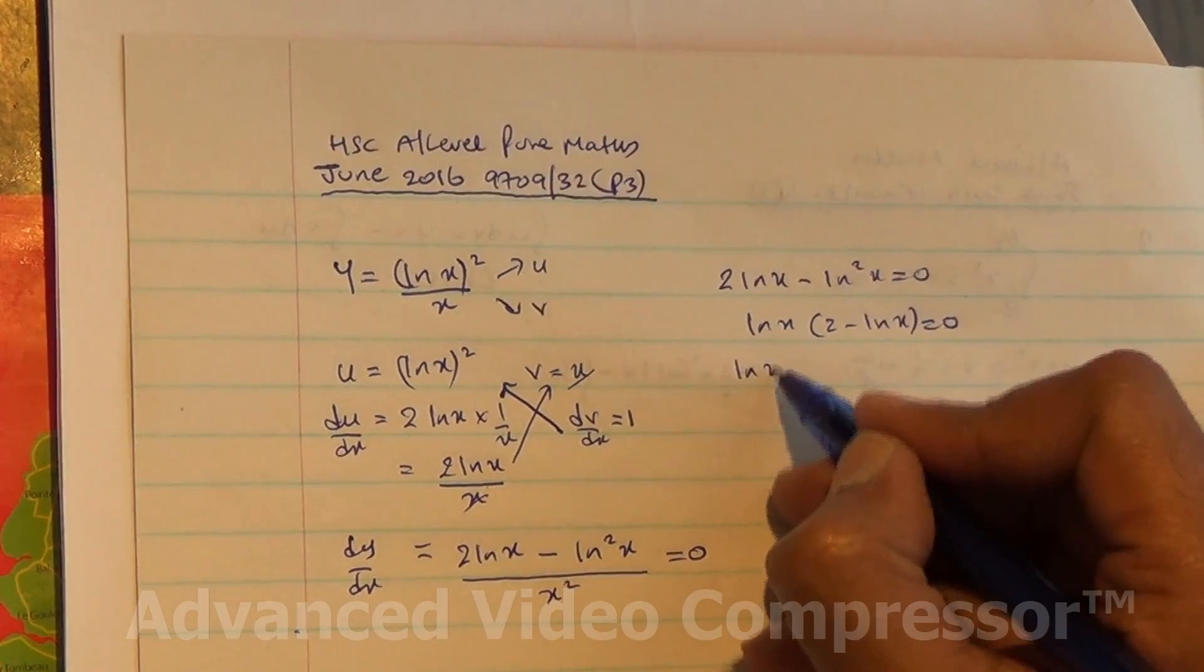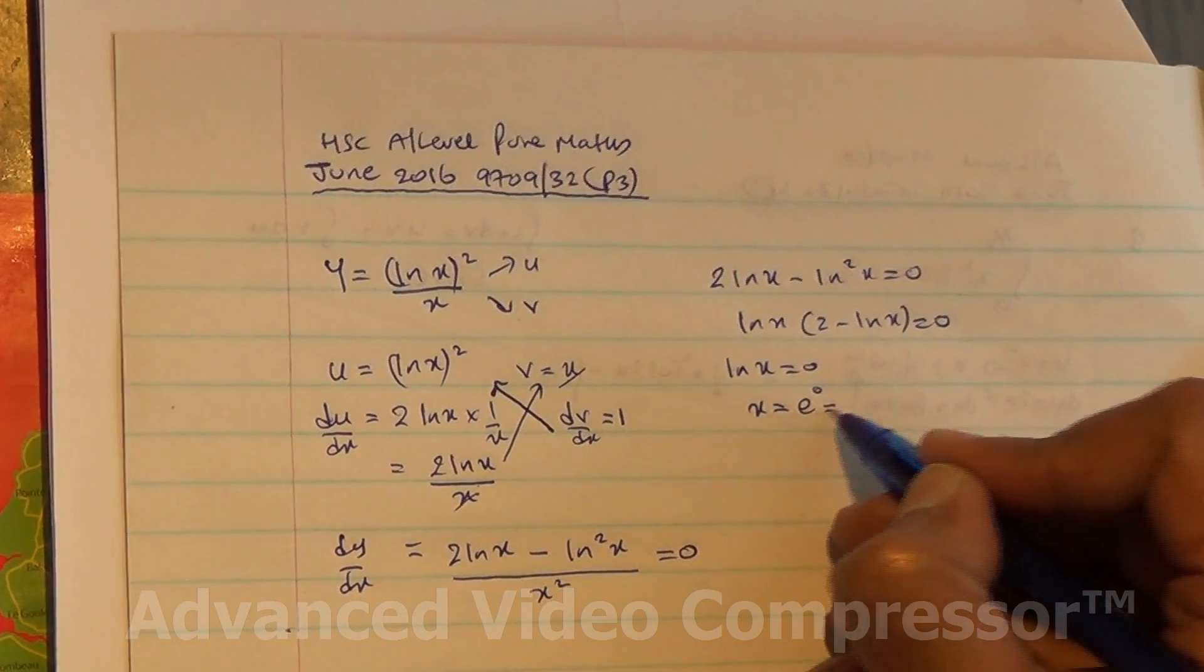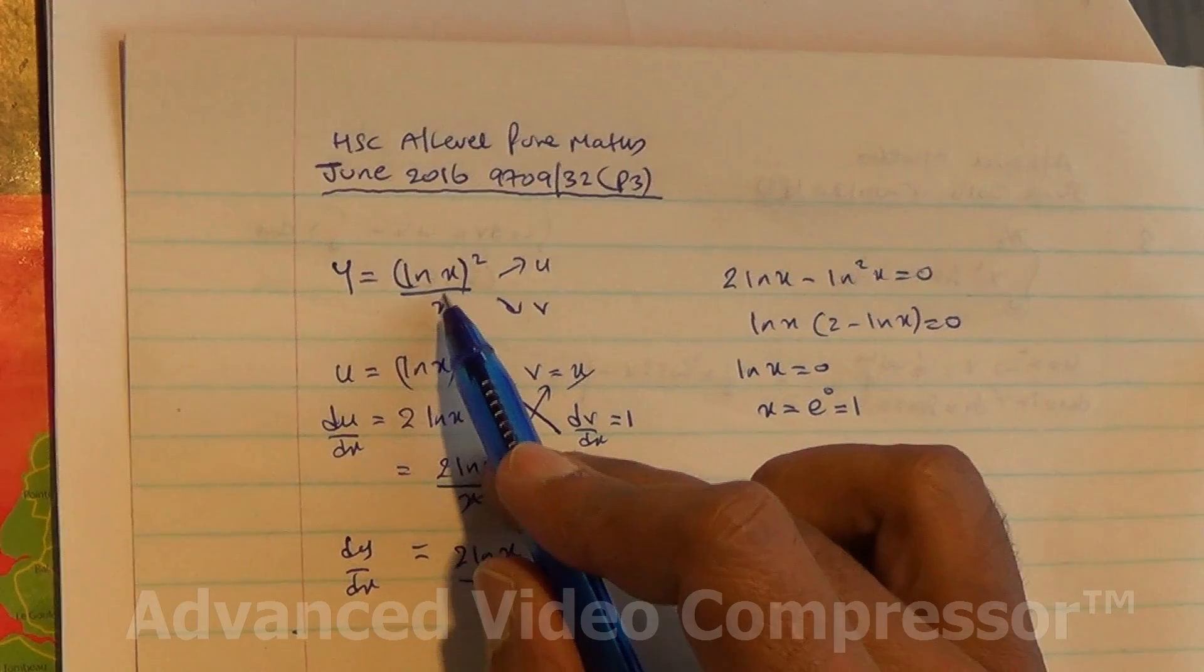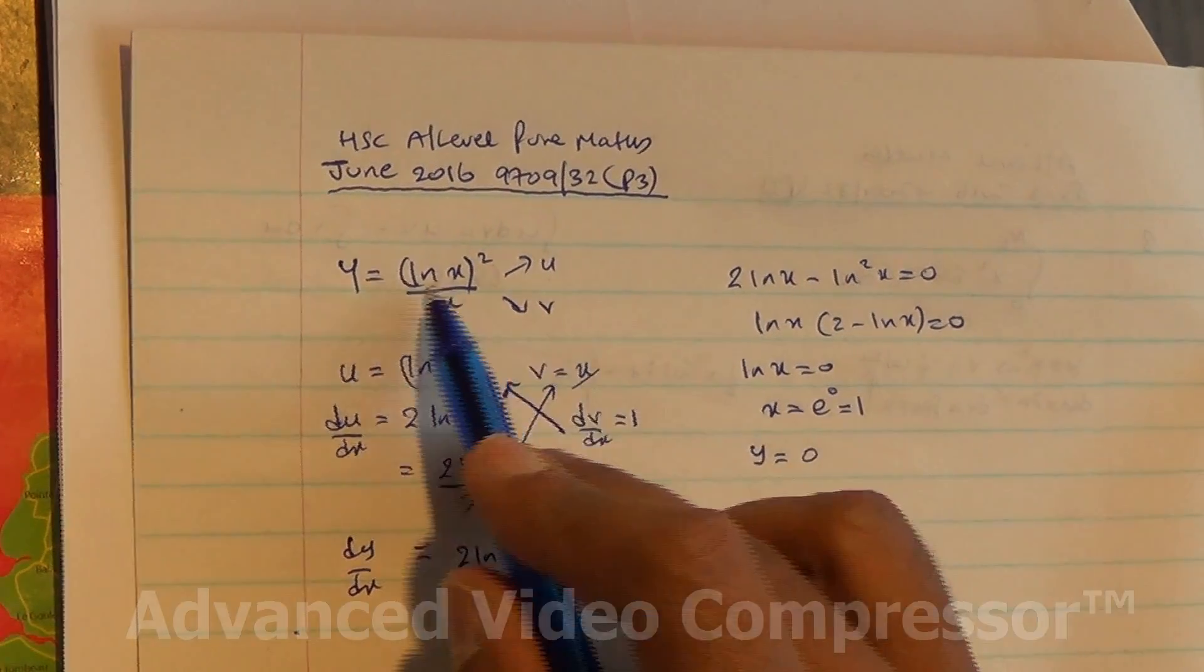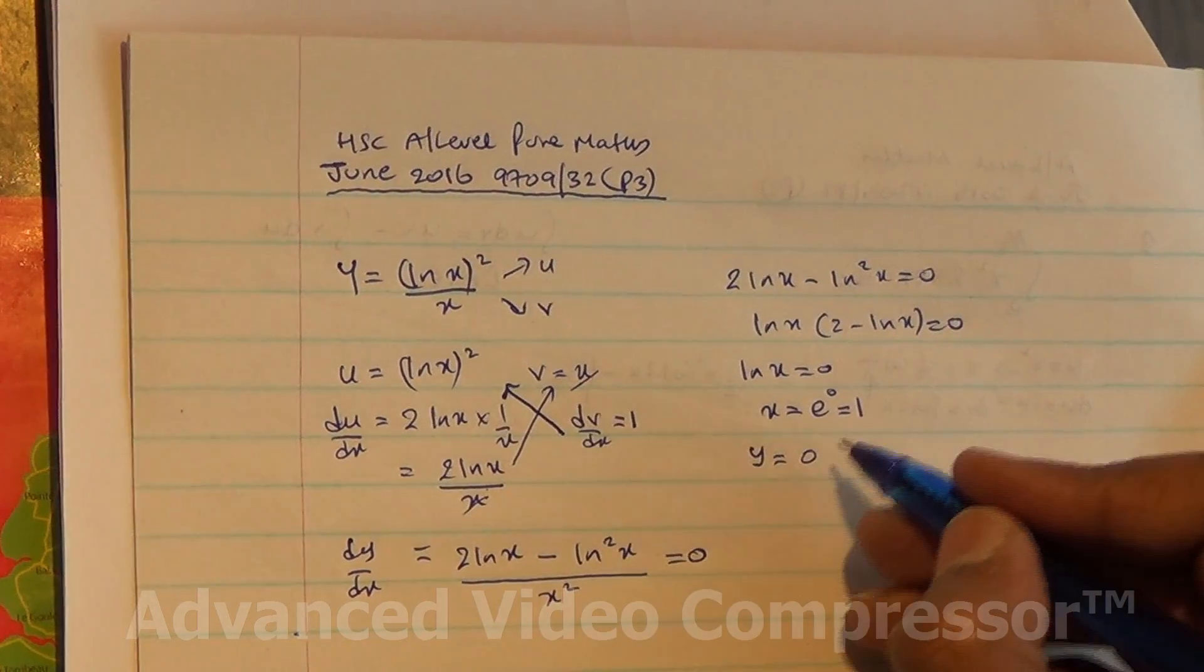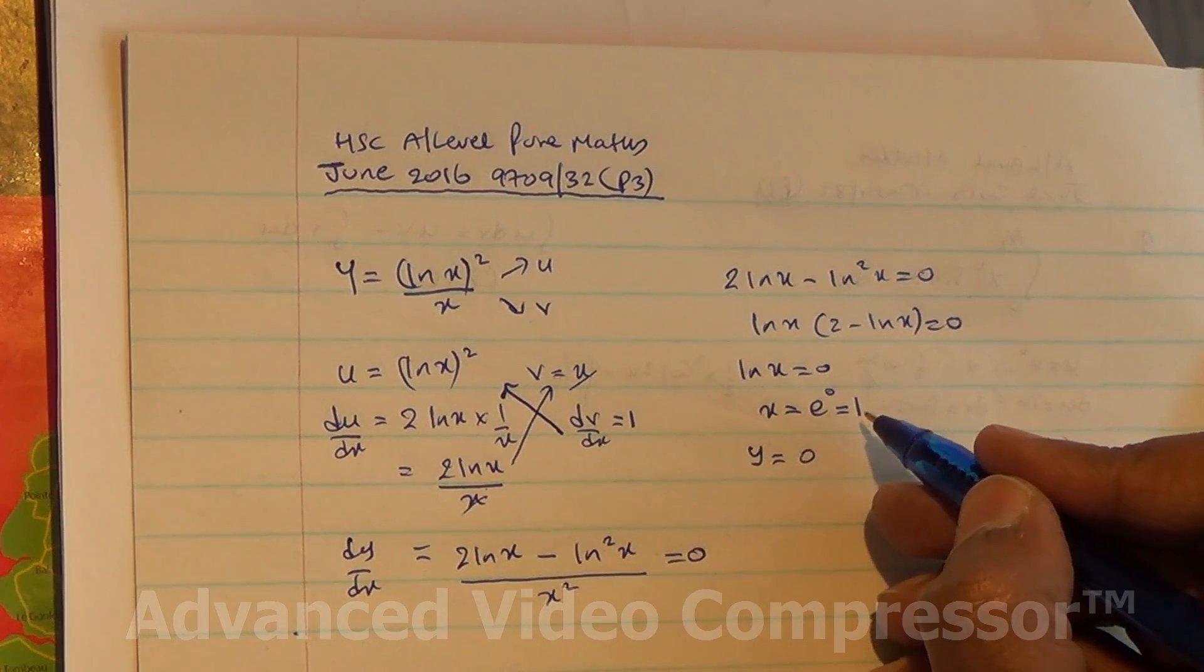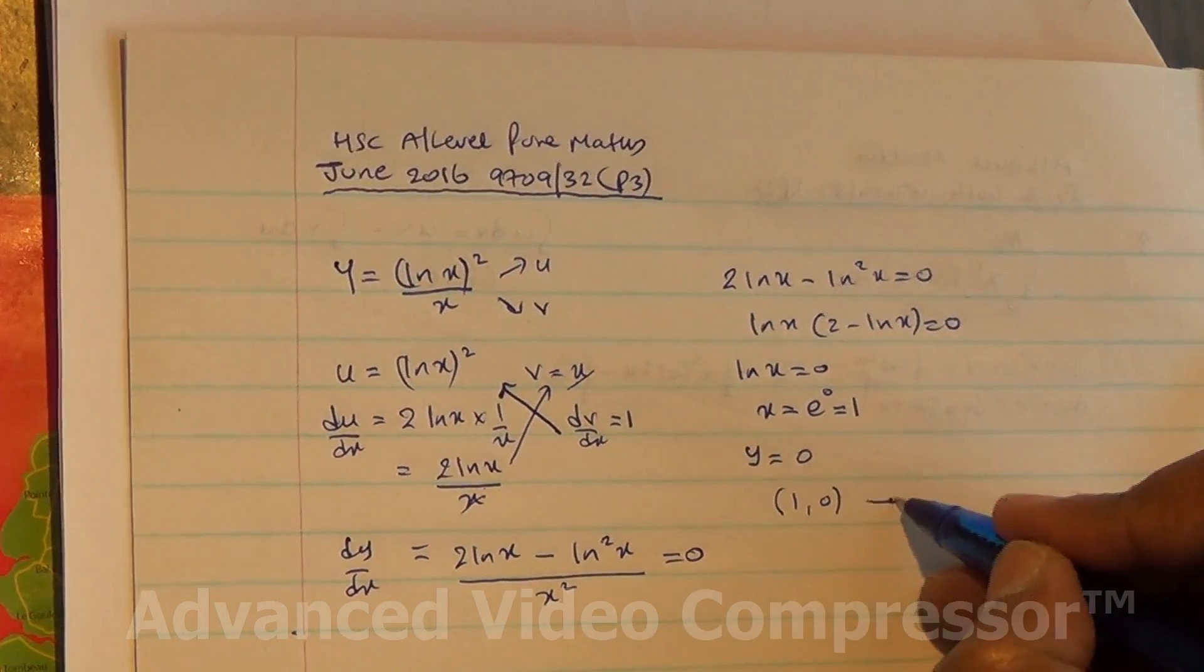Factor out ln x: ln x(2 minus ln x) equals zero. So ln x equals zero, therefore x equals e⁰, which is 1. When x equals 1, y equals zero because ln 1 is zero. So the first stationary point is (1, 0).